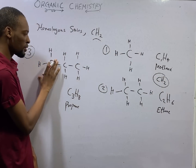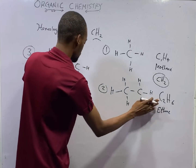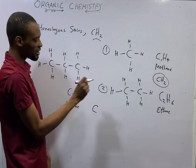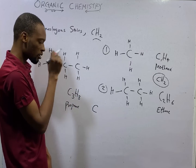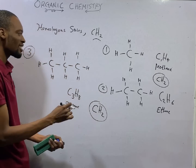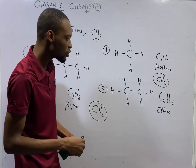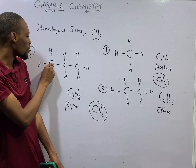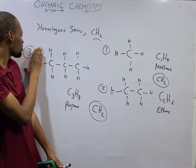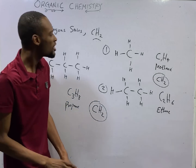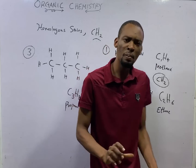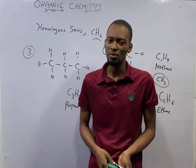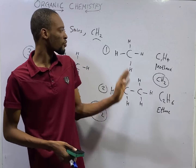Now let's see the difference between member two and member three. This one has three carbons, that one has two — three minus two is one carbon. This one has eight hydrogen, that one has six — eight minus six is two hydrogen. So that is CH₂ again. You see that each member differs by a CH₂ group. If you draw the one with four carbons you will also find the difference is CH₂. This is the first characteristic of homologous series.